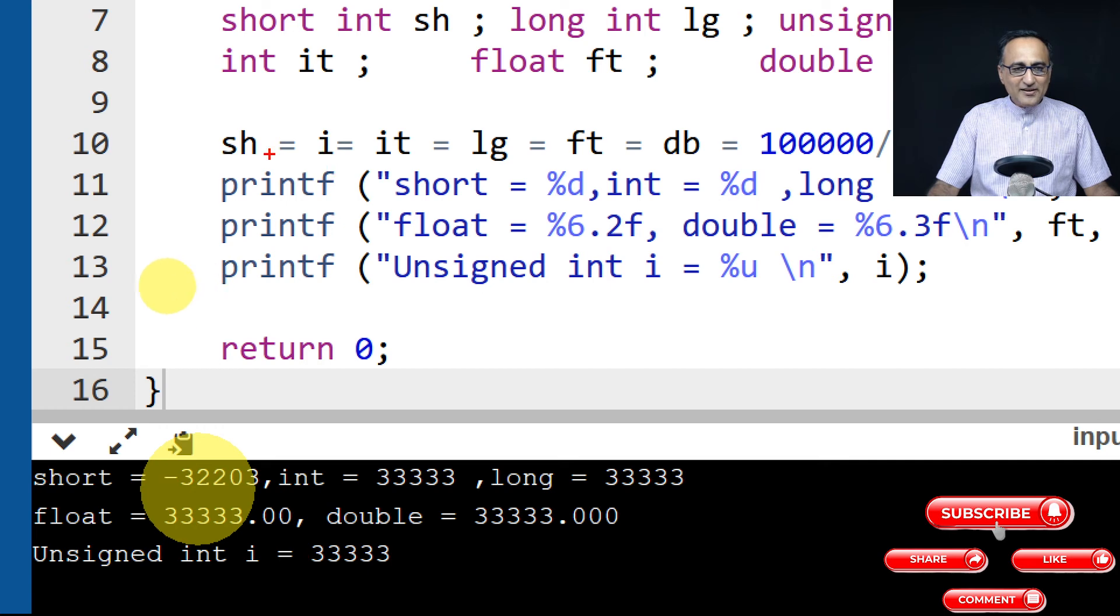But when from unsigned int it got copied to short int, that's where the problem started because short int being only two bytes cannot hold 33,333. The only maximum size it can hold is 32,767. Therefore, an overflow occurred and you had the negative number in the short int.